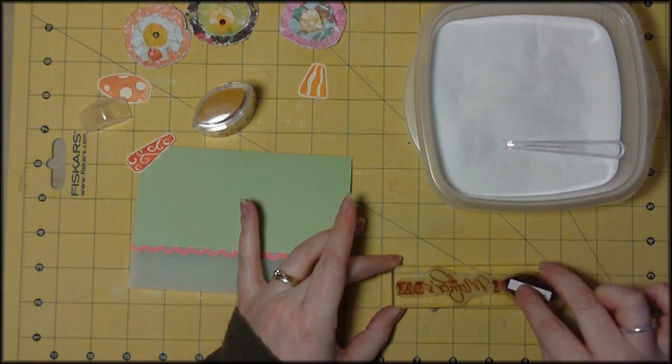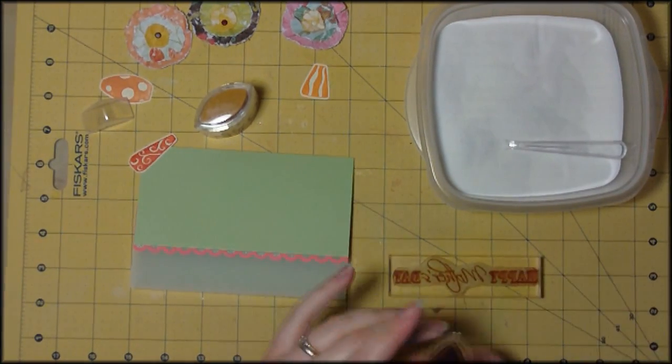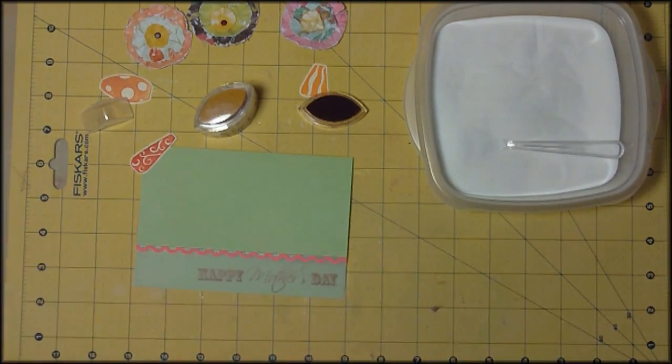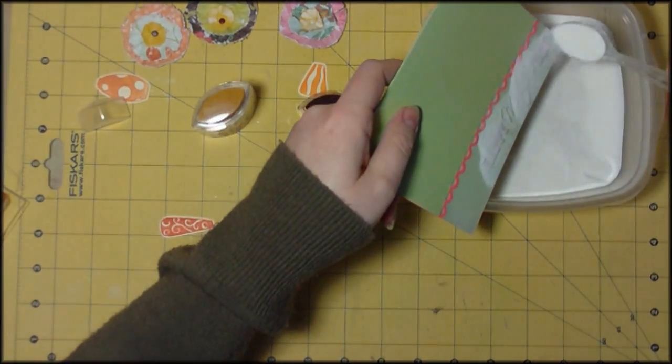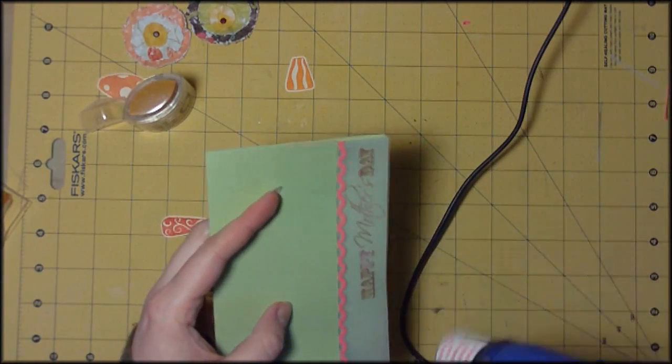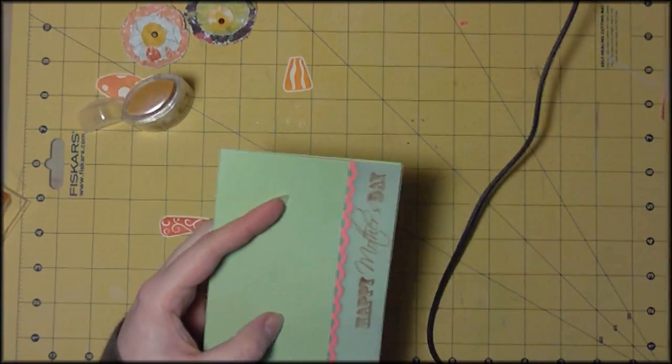So here I'm just inking up a stamp that I made and designed myself using the image pack kit and I'm inking it up in some normal Colorbox chalk ink and then just hitting it with some clear embossing powder. Just do be careful when you're inking on vellum because it can be very slippy so you've got to make sure you keep your stamp very still as you're stamping so it doesn't smudge.